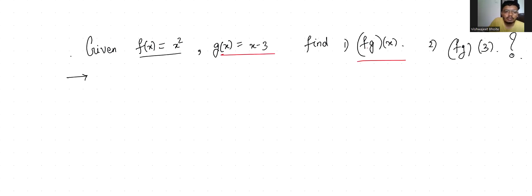f times g of x is basically f of x times g of x, which is x squared times x minus 3, which is x cubed minus 3x squared. This is f g of x.